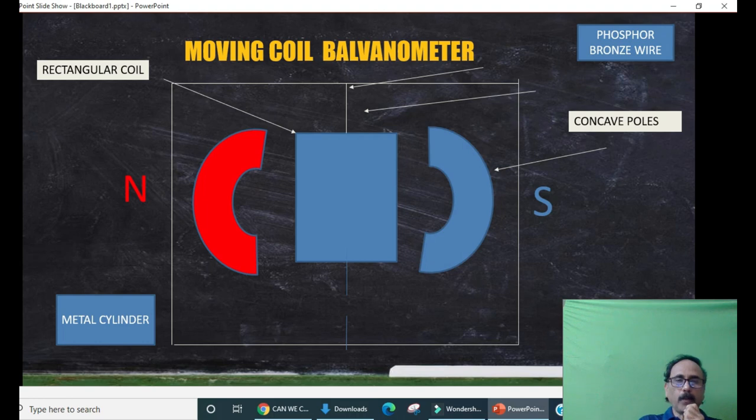Why we have to select the concave poles? Because concave poles will generate radial magnetic field. Why radial field is required? Because the angle between the area vector of the coil and the magnetic field is always maintained at 90 degrees.